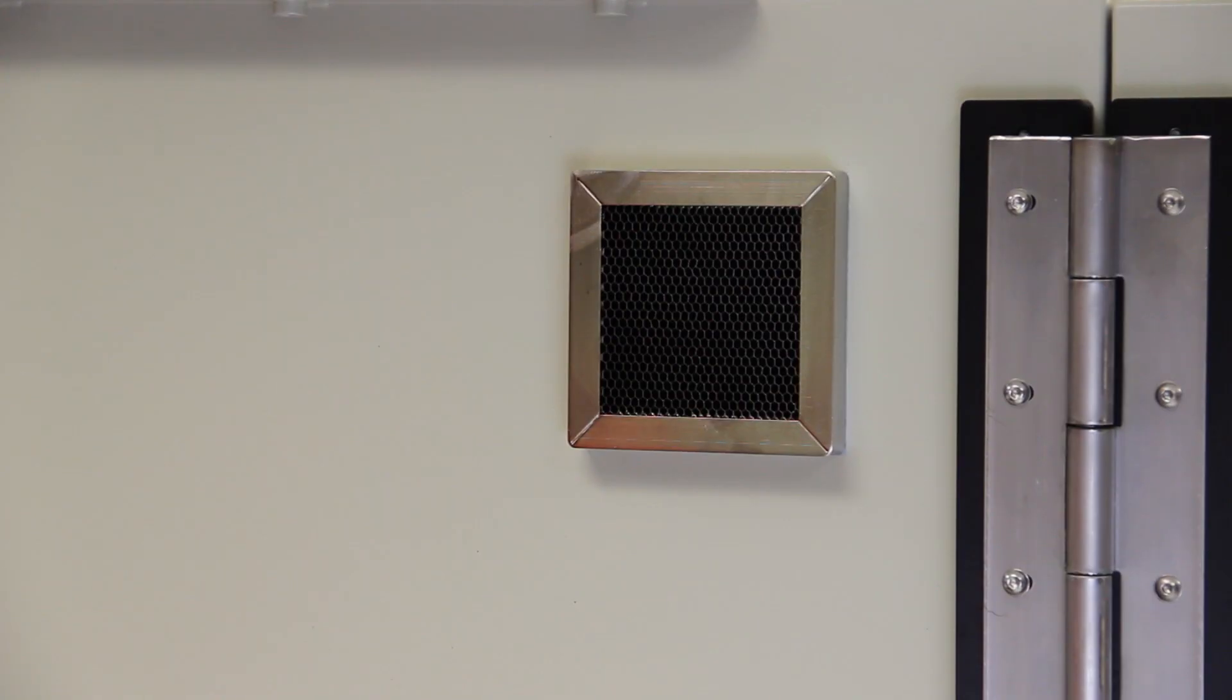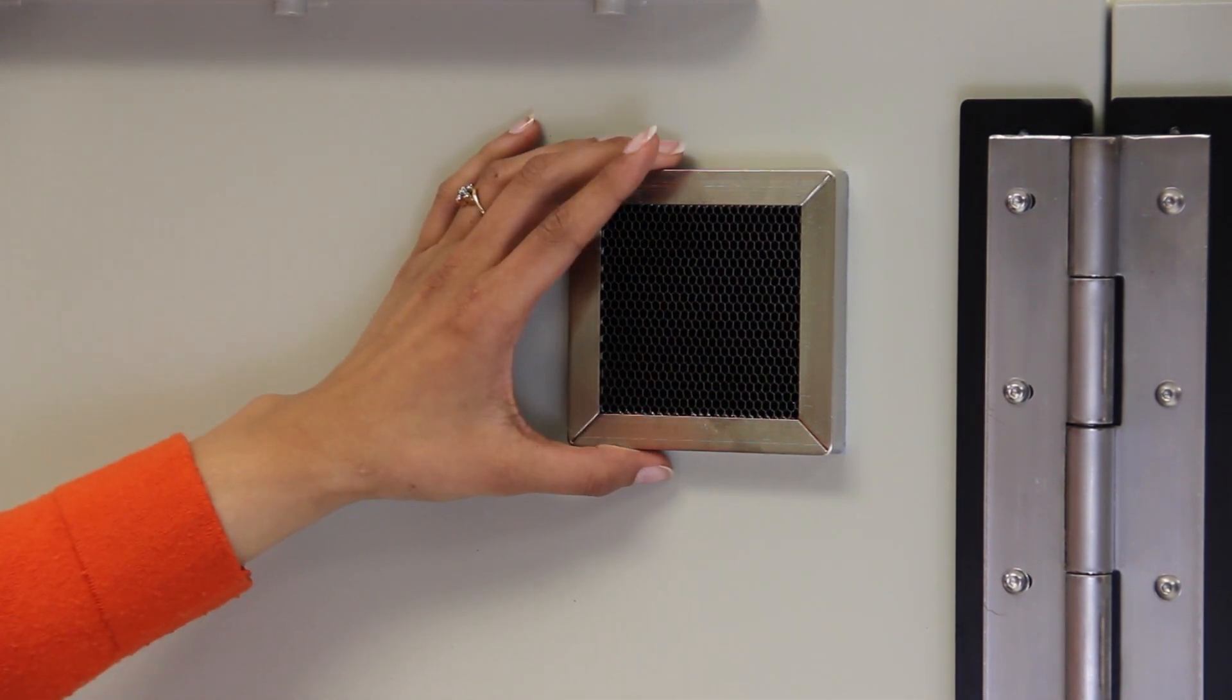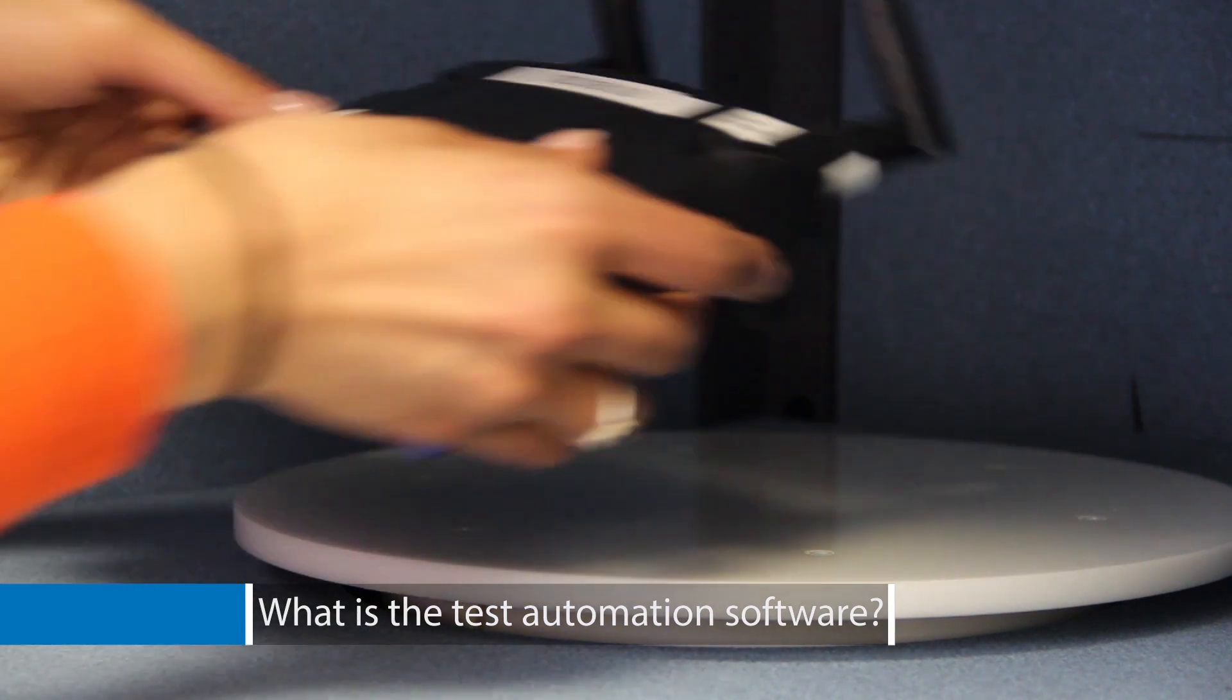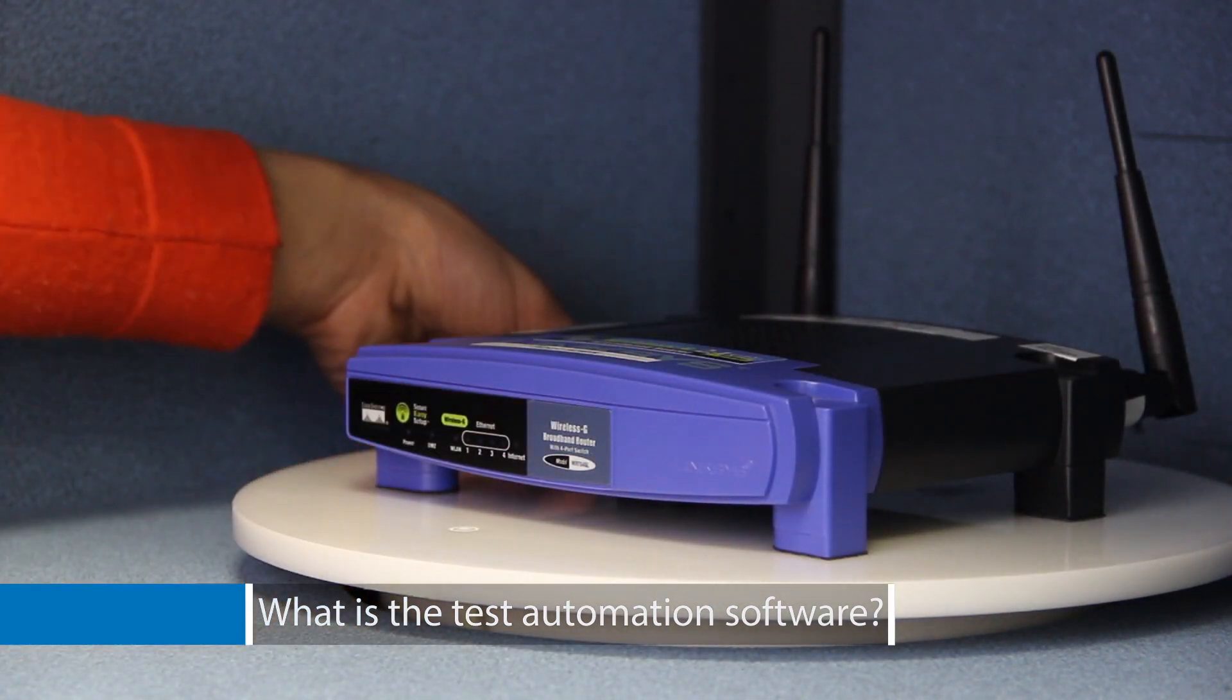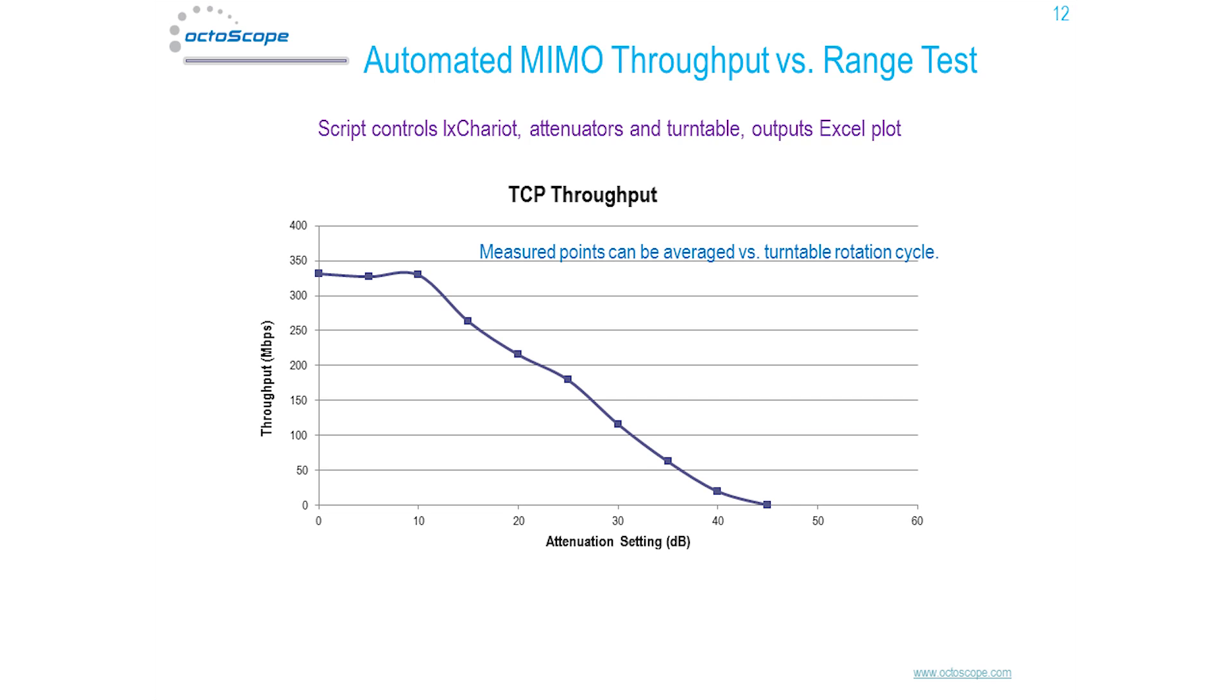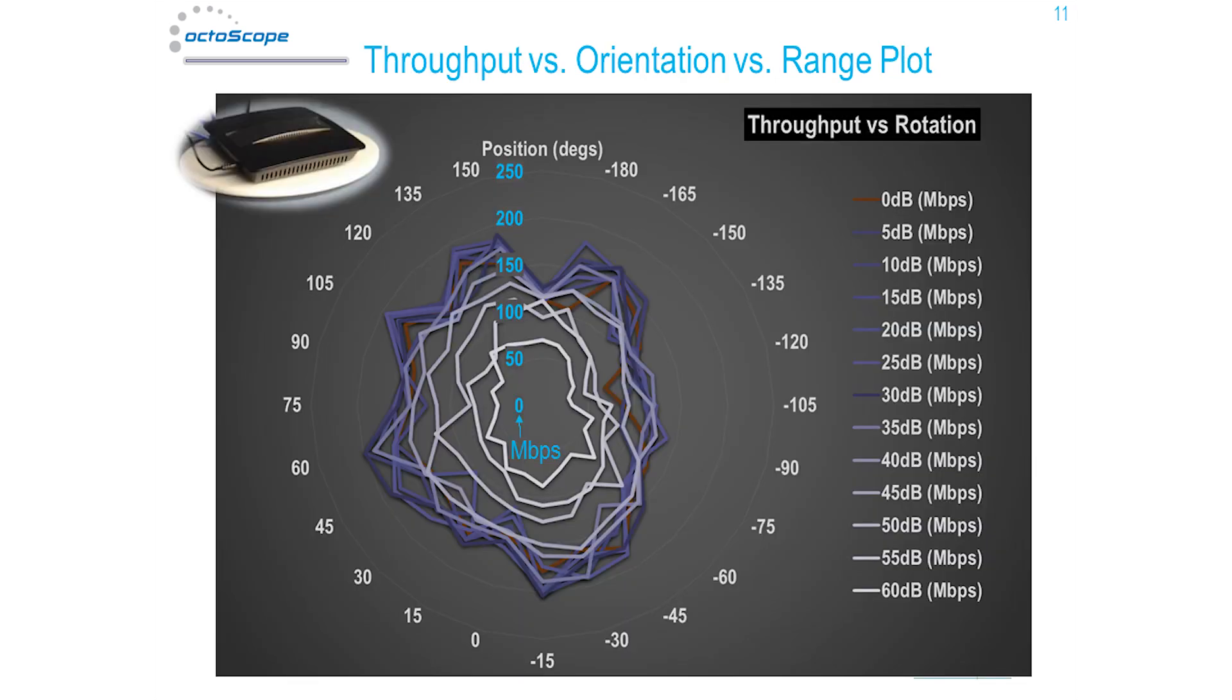Vents are made of honeycomb waveguide structure to provide isolation at all the operating frequencies. The test automation software controls the turntable, the attenuators, and the traffic generation between the device and the testbed, and produces an Excel-based plot that engineers can easily manipulate.